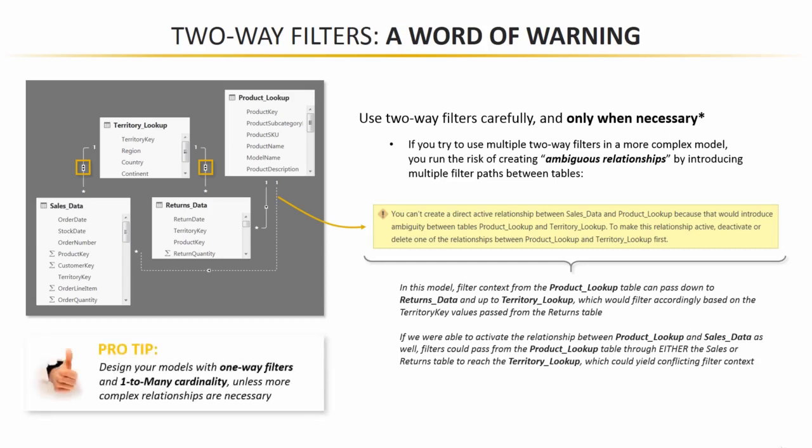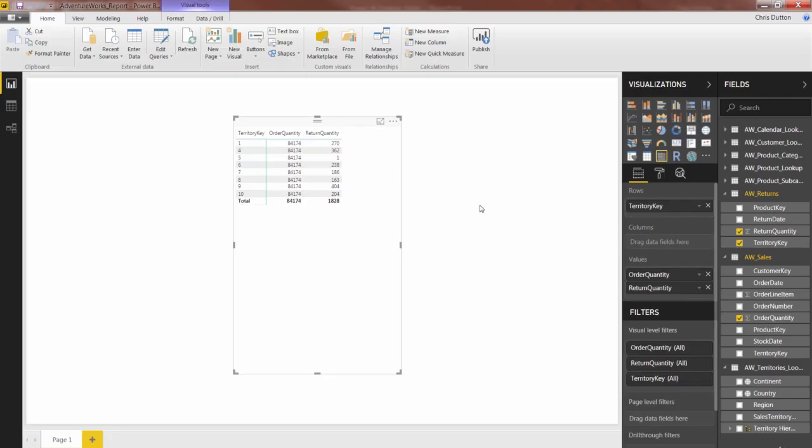So at the end of the day, that's really just a long-winded way of saying we don't want to use two-way filters in our particular model. And as a pro tip, rule of thumb, I'd recommend that you try to design your models with one-way filters and one-to-many cardinality, especially as you're first learning, unless more complex relationships are necessary. So with that, let's take a quick peek at what this actually looks like in the Power BI environment.